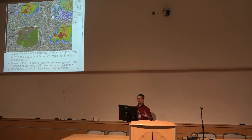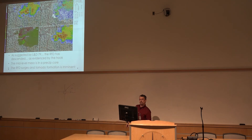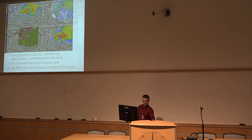The hook is still kind of raggedy but it's there, and the RFD is coming now. The next scan you can see the hook suddenly rapidly formed, and the storm is on the verge of making a tornado.